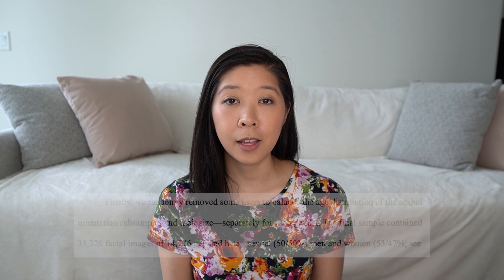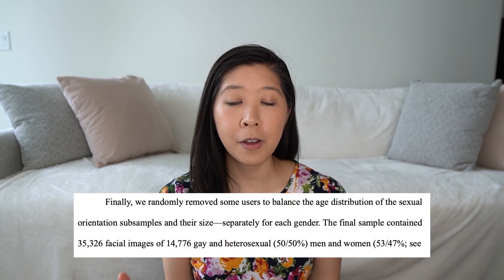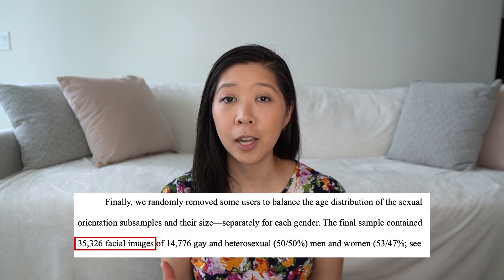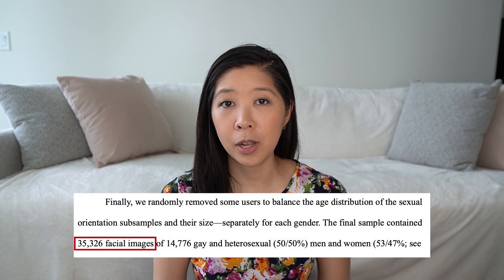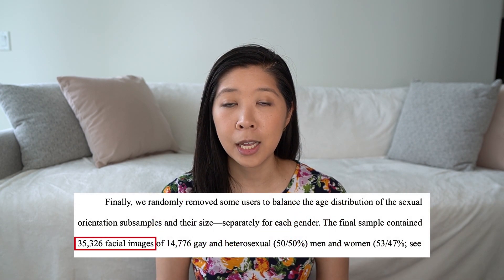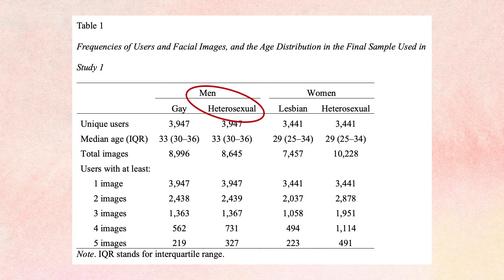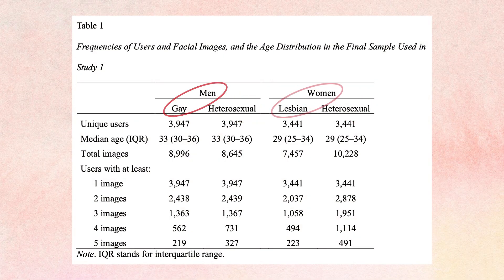Their paper was published in 2016. They used over 35,000 images from people's public online dating profiles in the US to build a model to differentiate between straight men, straight women, gay men, and lesbian women.